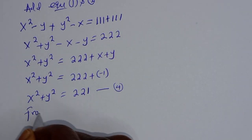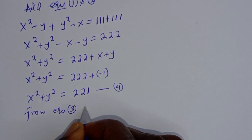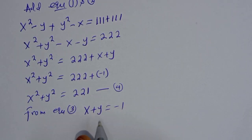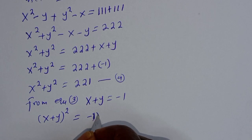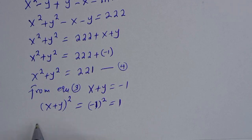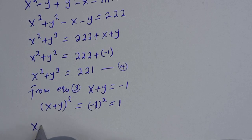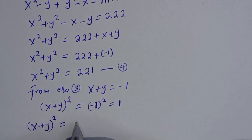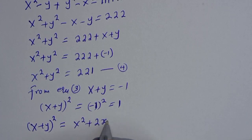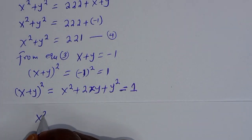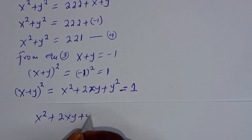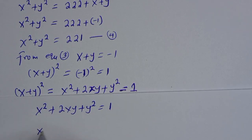From equation 3, x plus y equals minus 1. Let's square both sides: (x plus y) squared equals (minus 1) squared equals 1. We know from the expansion rule that (x plus y) squared equals x squared plus 2xy plus y squared, which equals 1. So x squared plus y squared plus 2xy equals 1.